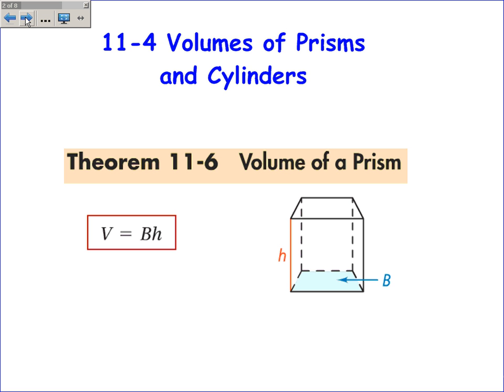The formula for the volume of a prism is the area of the base times the height. Capital B is always the area of the base. The area of the base times the height will give you the volume of a prism.